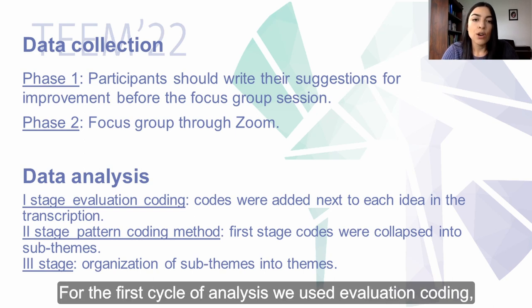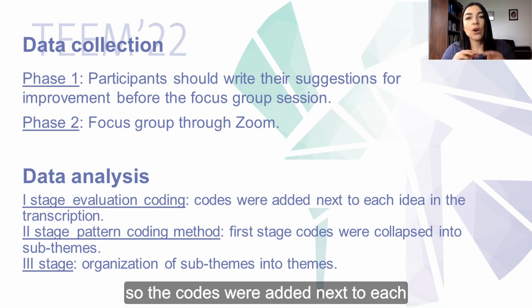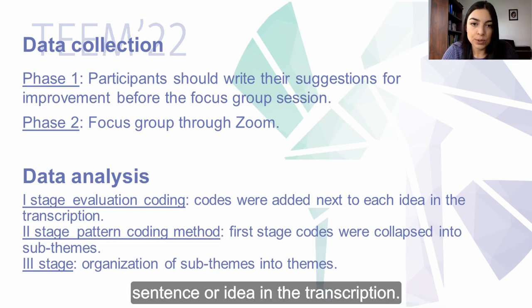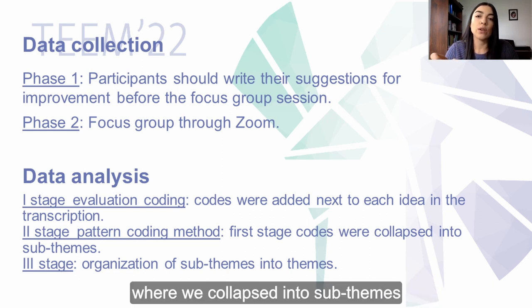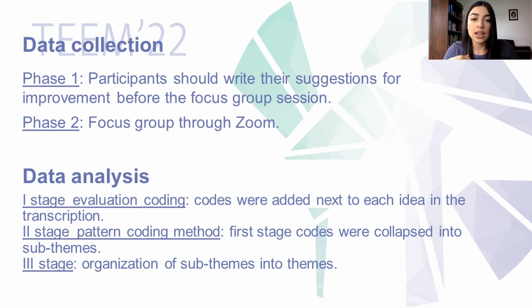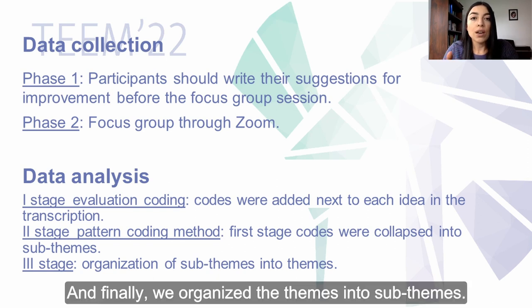For the first cycle of analysis, we used evaluation coding, so the codes were added next to each sentence or idea in the transcription. The second stage consisted of using pattern coding method where we collapsed codes into sub-themes that emerged from the first stage. Finally, we organized the themes into sub-themes.